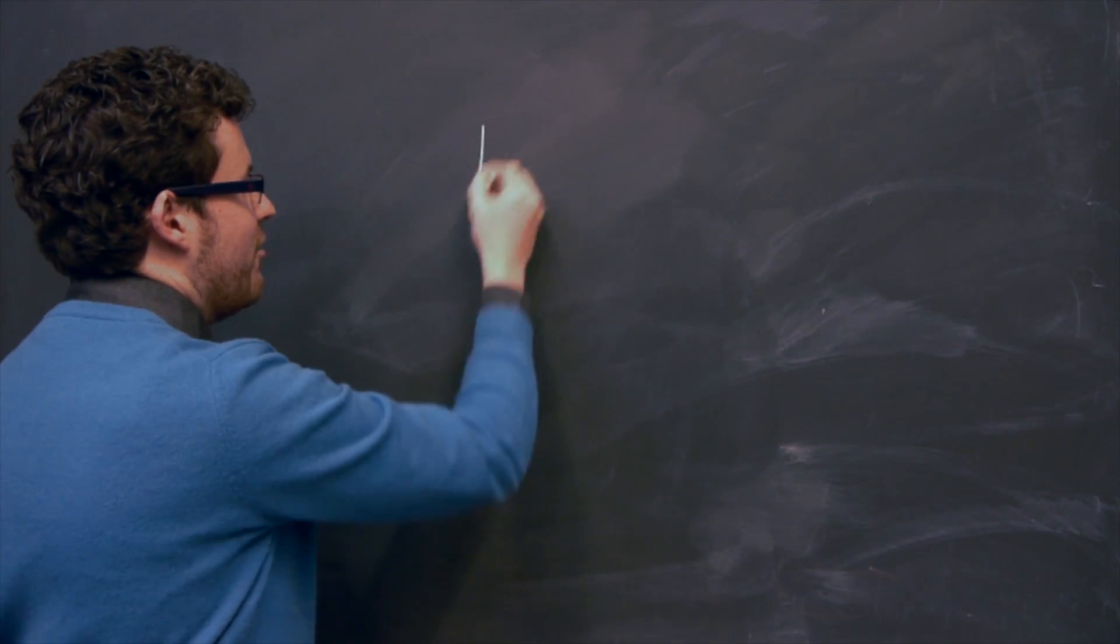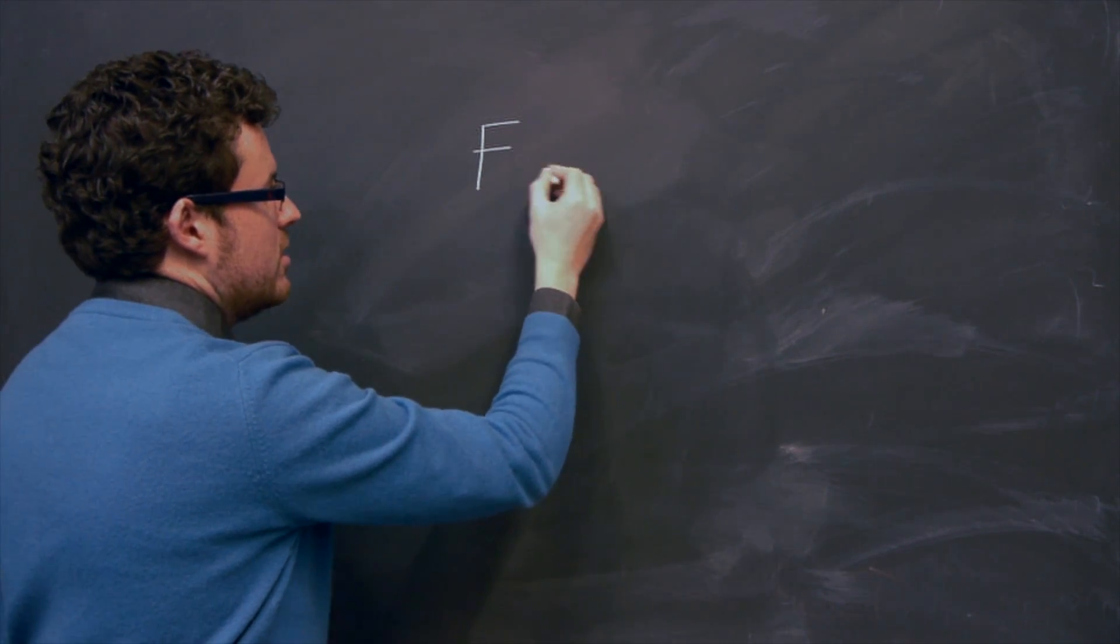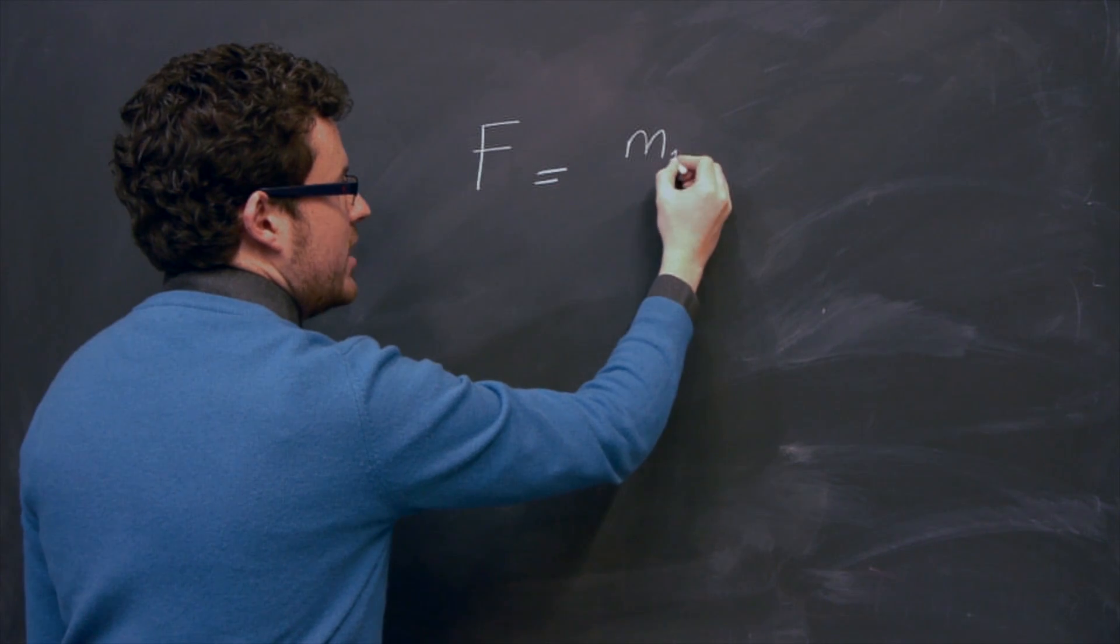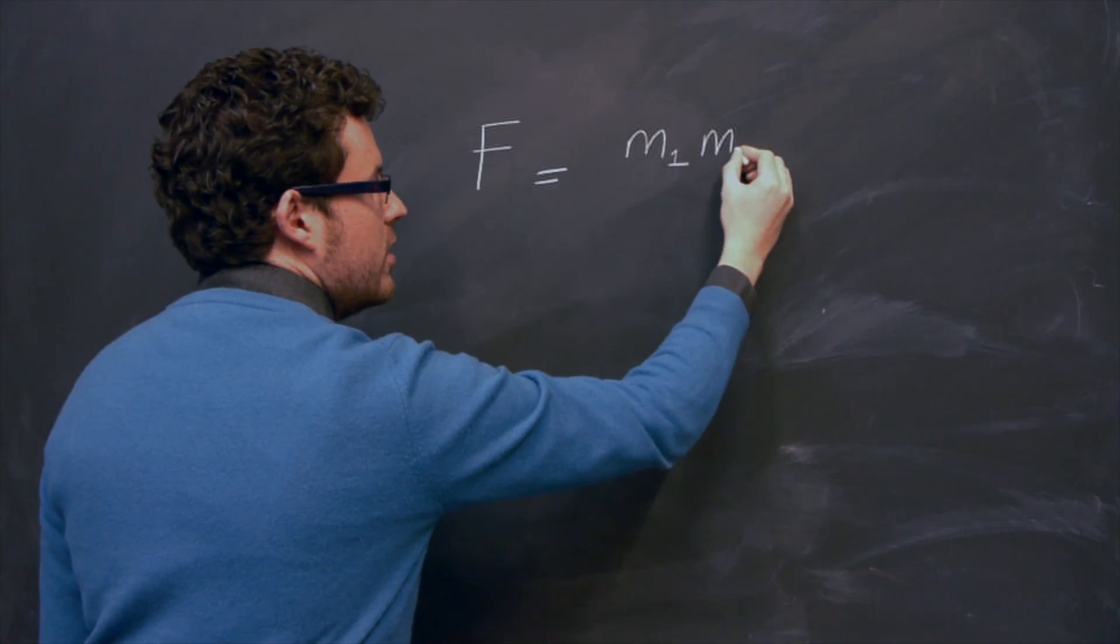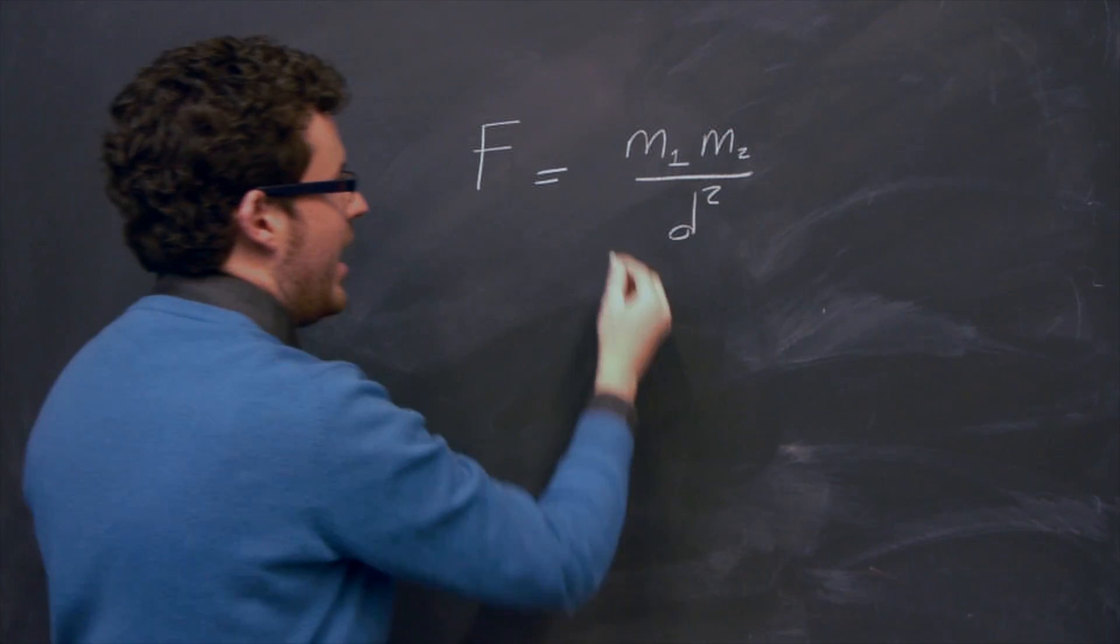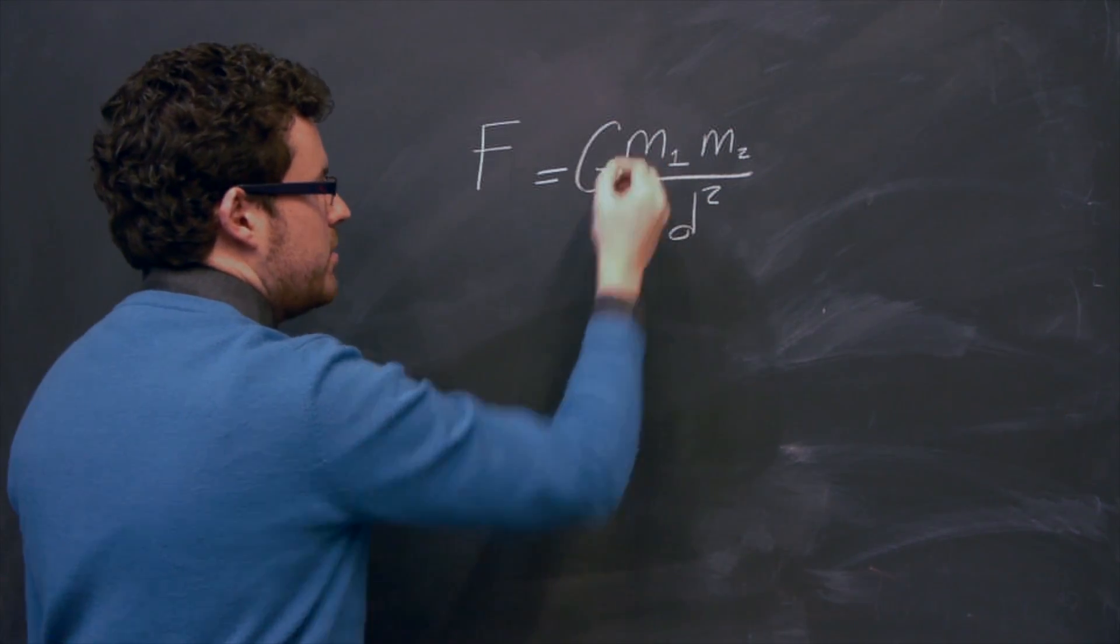So we call this F. And he said this force of attraction was dependent upon the masses of the two objects in question, M1 and M2, the distance between them squared, and a constant, big G.